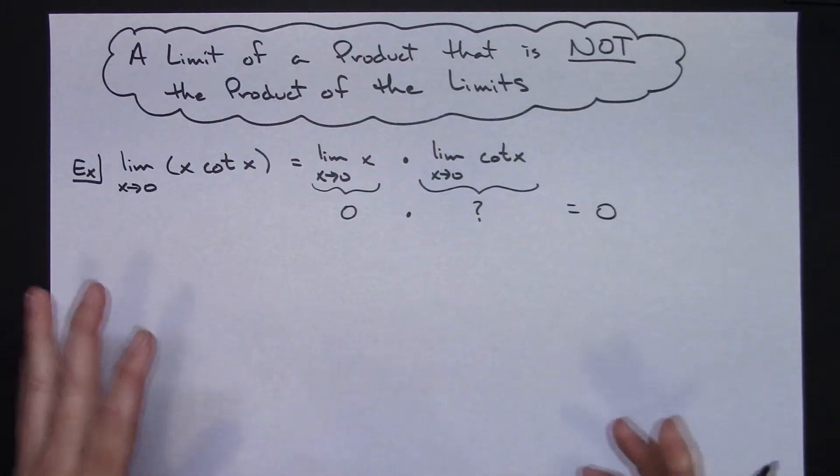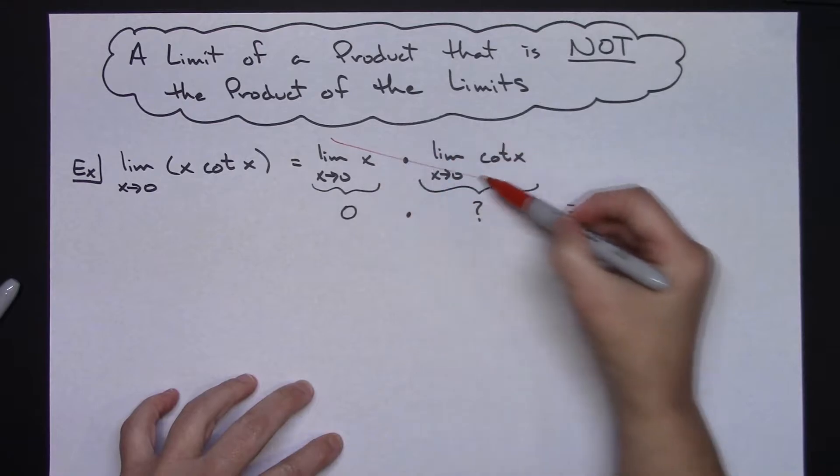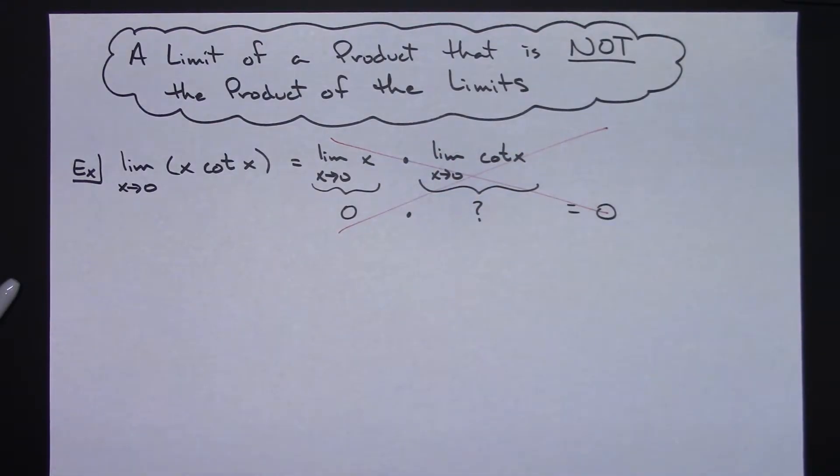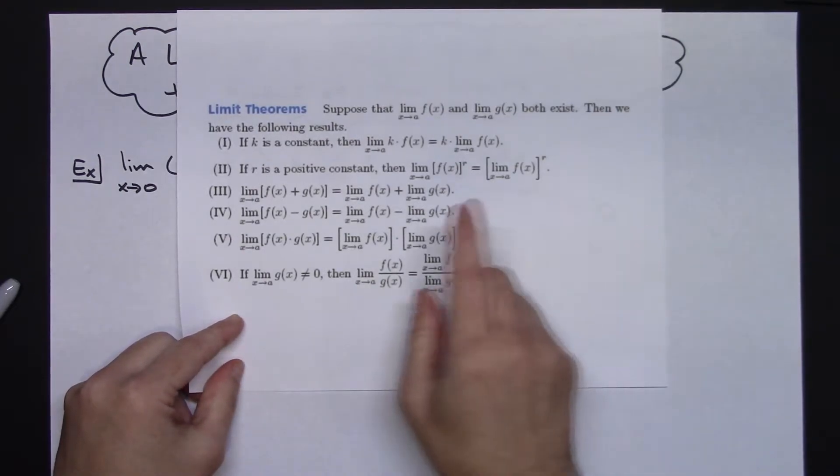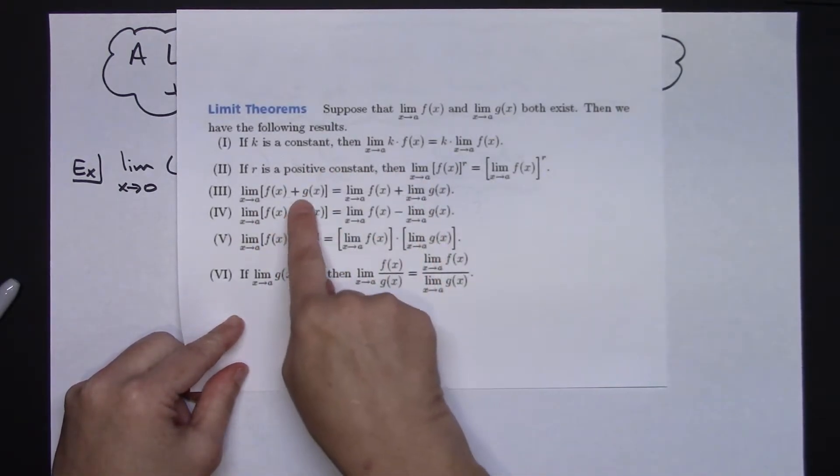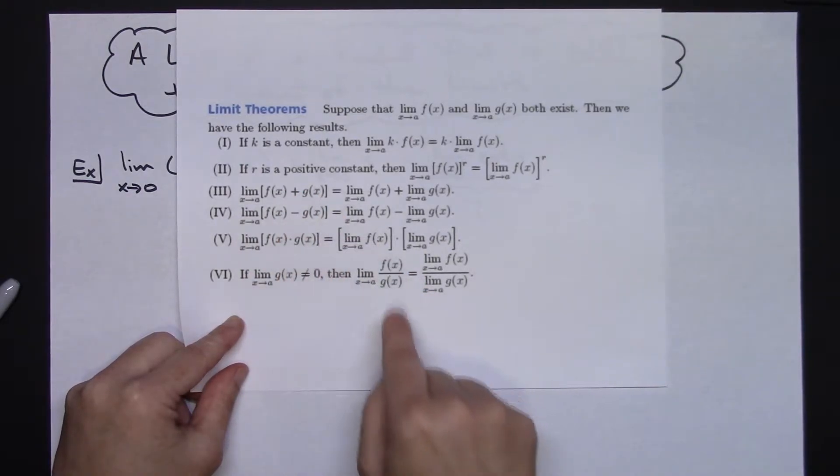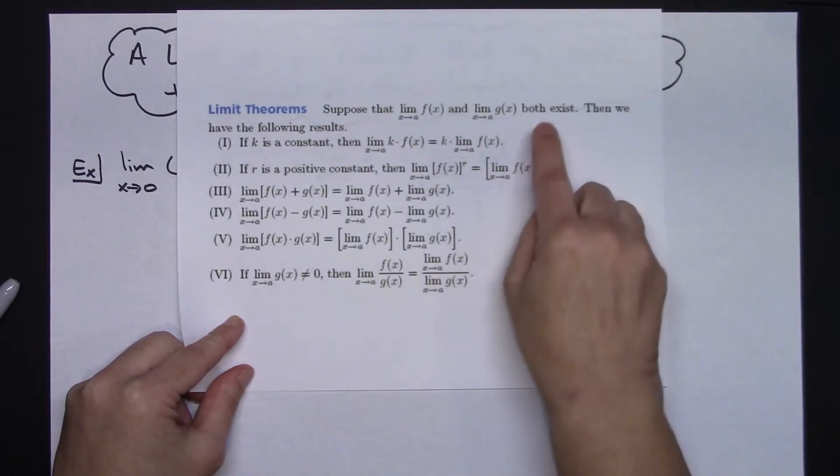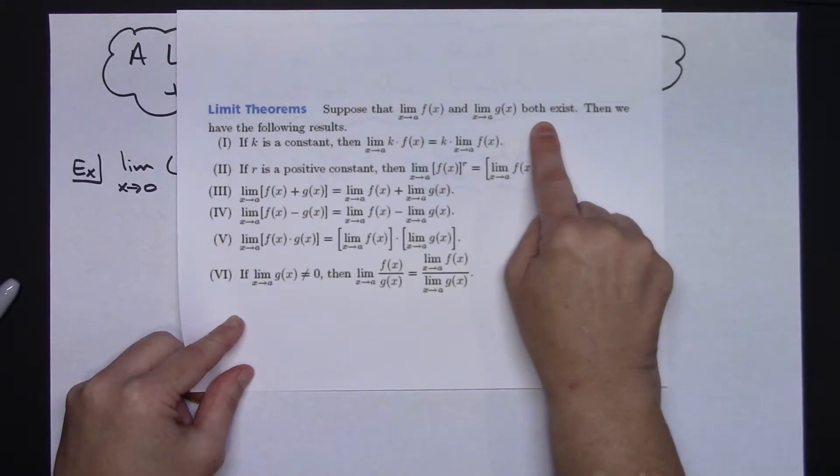And so then you're going to come to the conclusion that the answer is 0, which is incorrect. Now what I want to point out about this limit theorem here is, all of these, you know, the sum and difference, you're taking the limit of the sum of difference, or the product, or a quotient here. All of these are only true if both the individual limits exist.